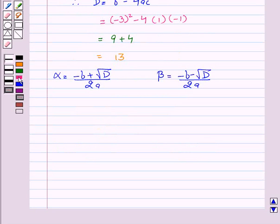Now, on substituting the value, we get alpha equal to minus of minus 3 plus square root of 13 upon 2 into 1. This gives alpha equal to 3 plus square root of 13 upon 2.